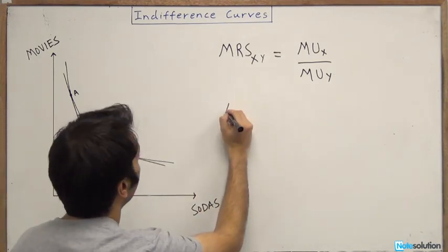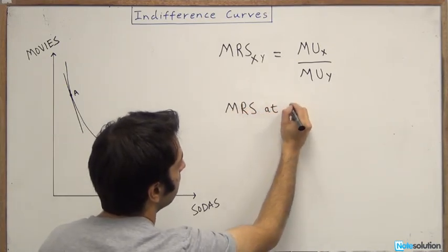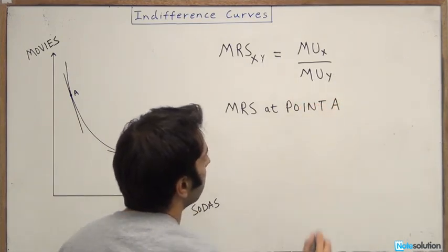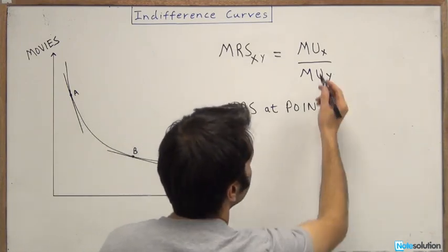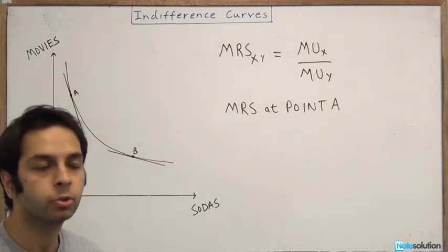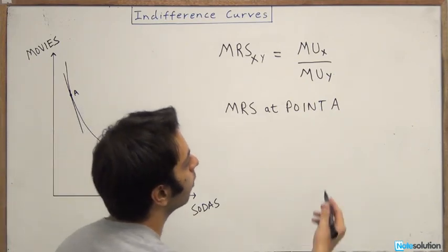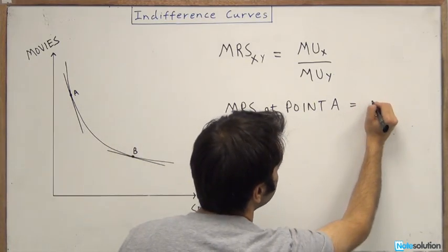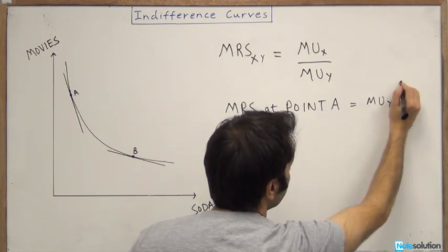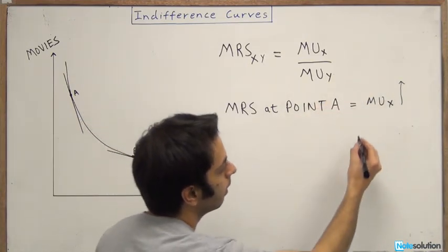So let's just take the MRS at point A. It's going to be, the marginal increase in X, or the marginal increase in sodas, is going to be huge, just because you don't have enough and you really would like to have some more of these sodas. So let's just say marginal utility of X goes up by a large amount. So, a large arrow just to show a large increase.